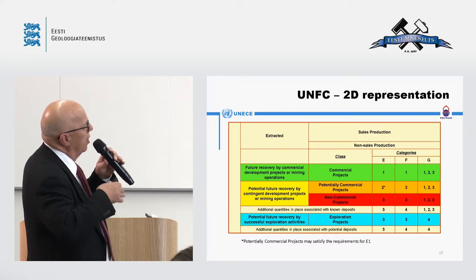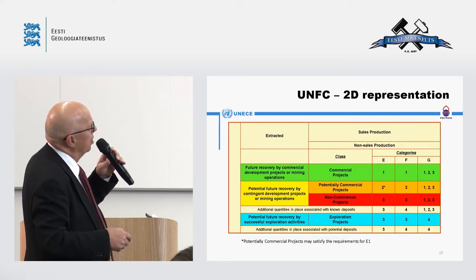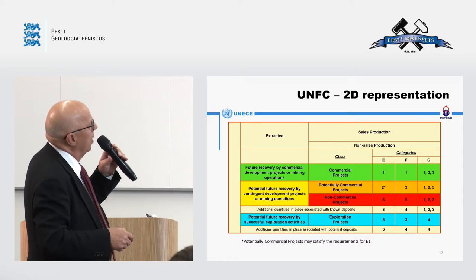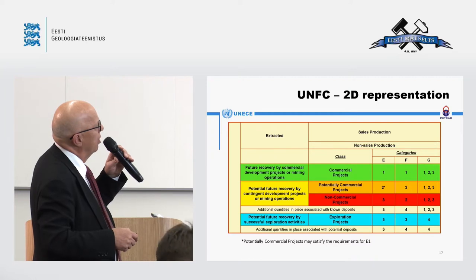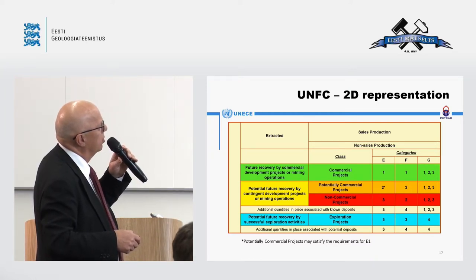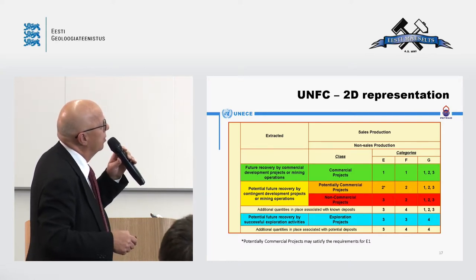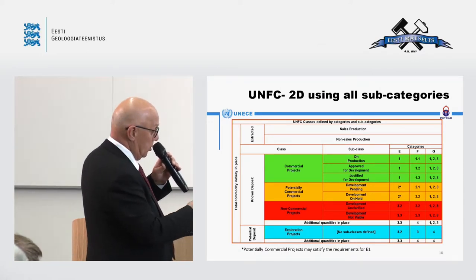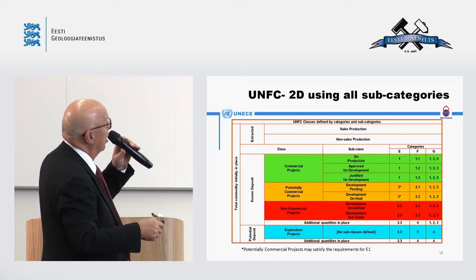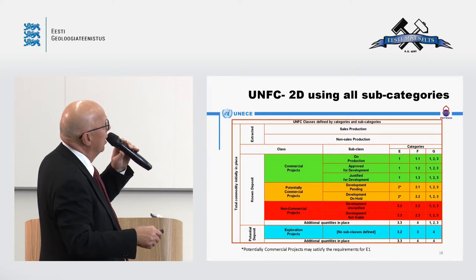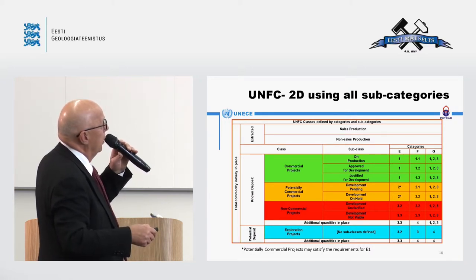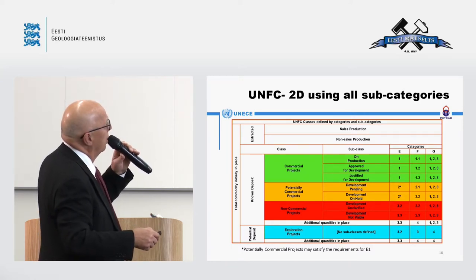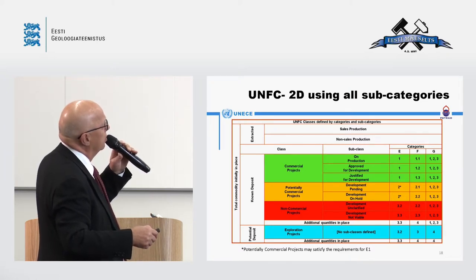Since one dimension is lost in the 2D view, you can see situations where, for instance, a potentially commercial project may have E1 met but F2 — meaning it is certainly not a commercial project, because both E and F must be 1 for that. For project management purposes, a more detailed look is available through the detailed project classification, which provides subclasses for commercial projects: production, approved for development, and justified for development. These are all commercial projects at different stages — one may start producing, one is under development, and one is producing.